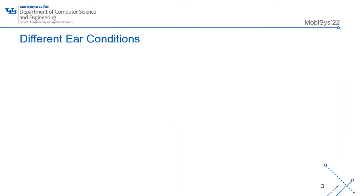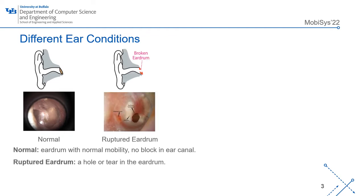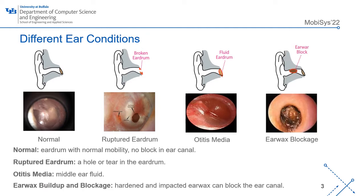The four most common ear conditions: The normal ear has no blockage in the ear canal and the eardrum has normal mobility. A ruptured eardrum means a hole or tear in the eardrum. Otitis media occurs when there's fluid in the middle ear, which decreases eardrum mobility. Earwax blockage means hardened or impacted earwax that can block the ear canal.